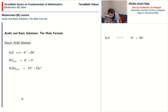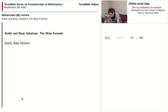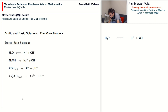HNO3 is another acid, and so on. For basic solutions, there is a similar kind of process. We can dissolve certain substances in water that create OH-minus ions. In addition to water as a source of OH-minus, we can dissolve substances such as NaOH, which generates Na-plus and OH-minus. Also KOH, which creates K-plus and OH-minus, as well as Ca(OH)2, creating Ca2-plus and OH-minus. These substances that create OH-minus ions when dissolved in water are called basic substances.